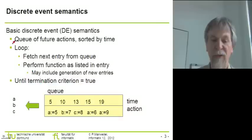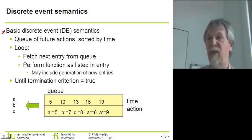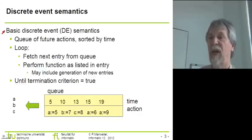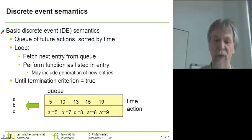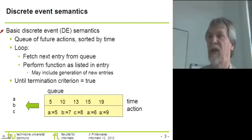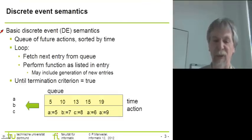What is discrete event modeling? In discrete event modeling, we assume that we have a certain list of discrete events, each of which is linked to a certain time. We are then requested to pick the next event and perform the action described for that event. As a result, a new event may be generated, and we do this in order of the timestamp associated with each entry.